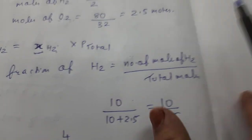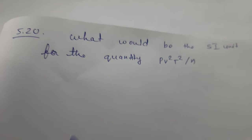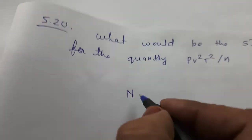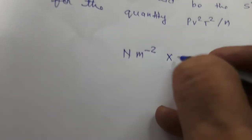So 10 is the moles of H2 divided by total moles. Then put in this formula, you will get the answer 0.8 bar. Now, the second question is: what would be the SI unit for the quantity PV squared T squared divided by n?